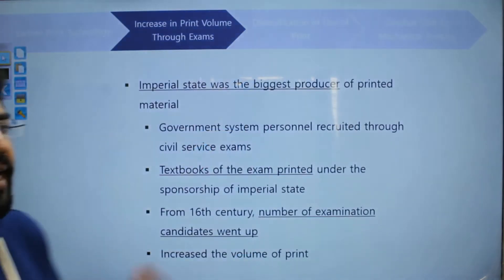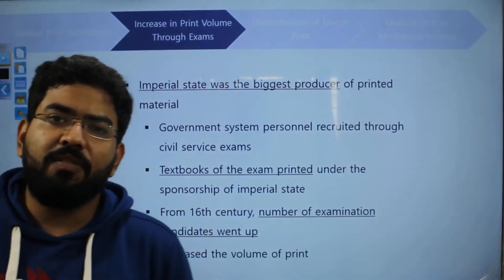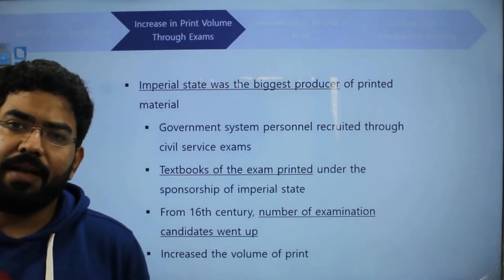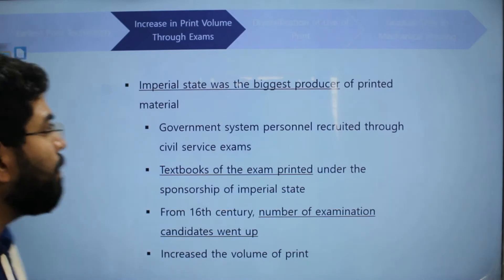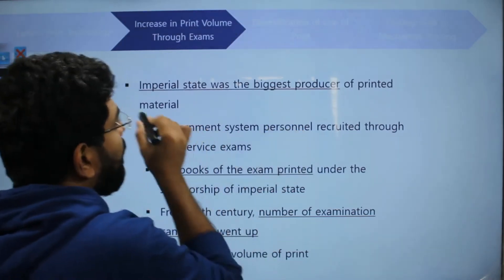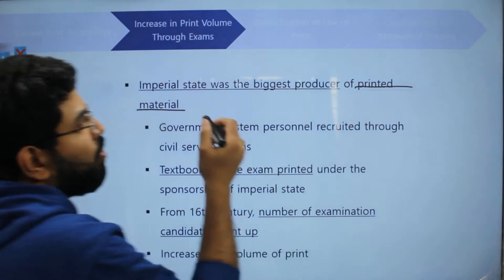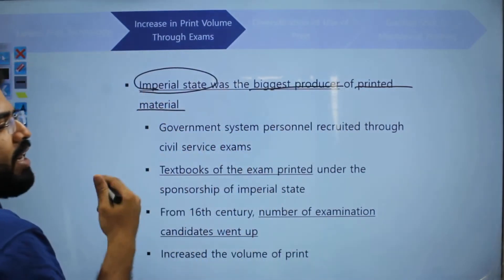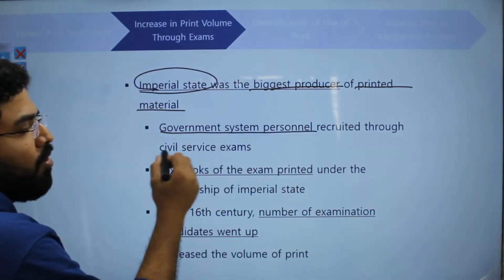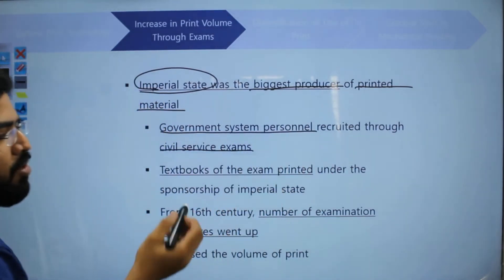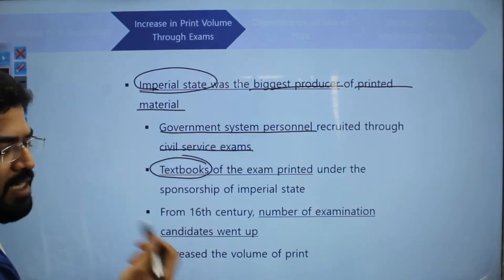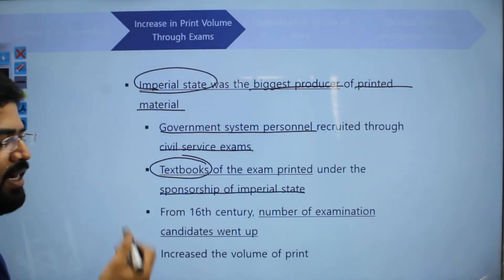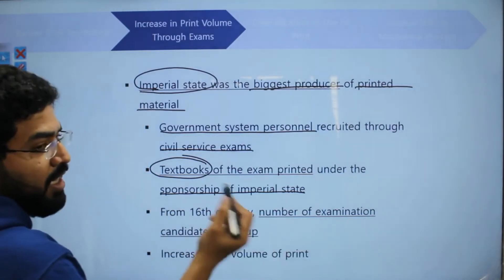When the Chinese government started recruiting for various services through exams, they needed printed material, which led to an increase in printed material. In the imperial state, the government was the biggest producer of printed material. Government personnel were recruited through civil services exams, and for that they had different textbooks which were printed and sponsored by the government.